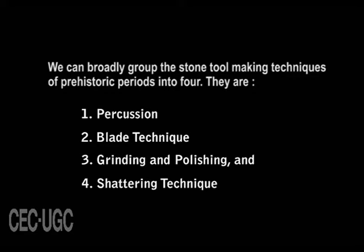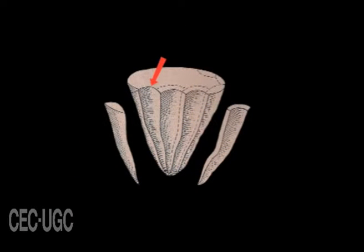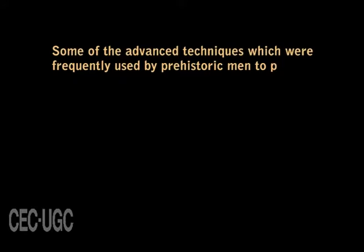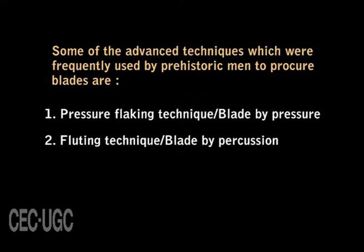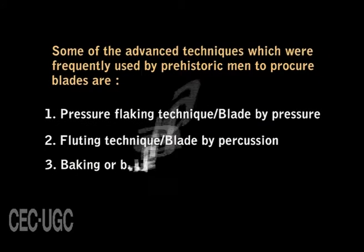The blade technique was known to humans for the first time during the Middle Palaeolithic. By this method, long, narrow, thin, and parallel-sided flakes have been produced in different parts of the world during the Palaeolithic period. This technique was regularly and extensively used during the Upper Palaeolithic, Mesolithic, and later periods. Advanced techniques used by prehistoric men to procure blades include pressure flaking technique, fluting technique, and backing or blunting technique.